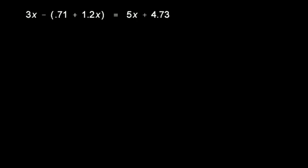So I'm going to start right here. Look at this. Minus this means I'm subtracting the 0.71 and I'm subtracting the 1.2x. So I'll rewrite this equation like this: 3x minus 0.71 minus 1.2x. And the right side I'll leave unchanged for now, so it's still 5x plus 4.73.